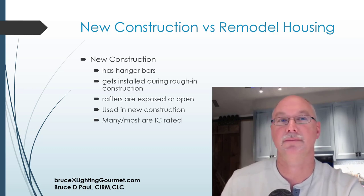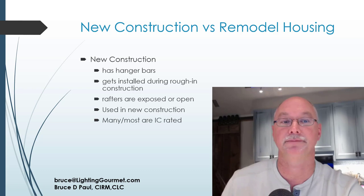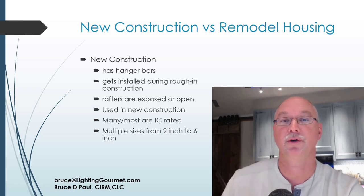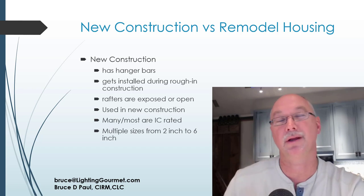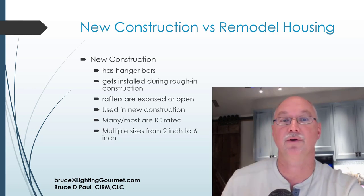Most new construction cans are going to be IC rated, but you need to know whether your can is IC or non-IC rated. If it's an exterior wall, it has to be IC rated — there's another video that covers that in more depth. Sizes vary from 2-inch to 6-inch. While 2-inch isn't very common and 3-inch tends to be a little more expensive, what's most common is 4-inch and 6-inch, and 5-inch cans are not infrequent. So for new construction, hanger bars — that's what you use.